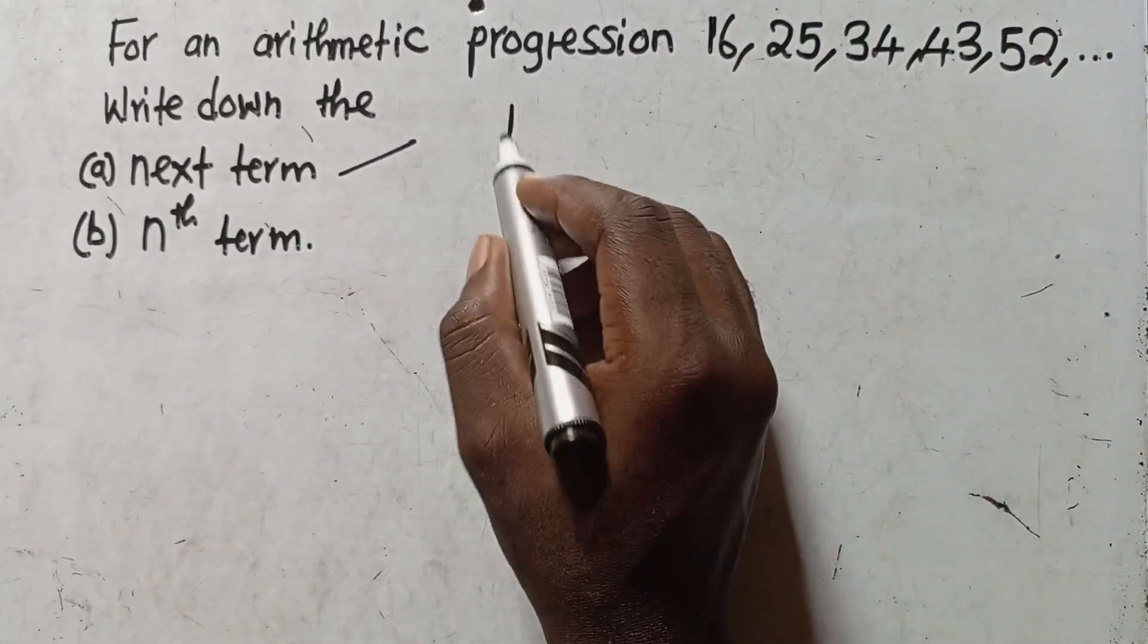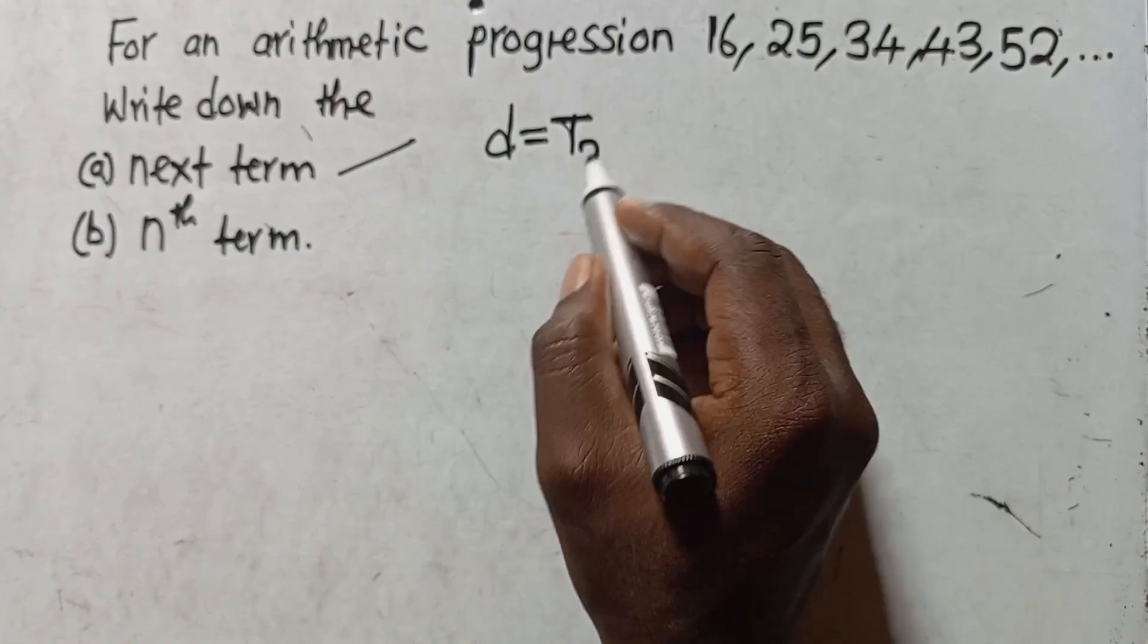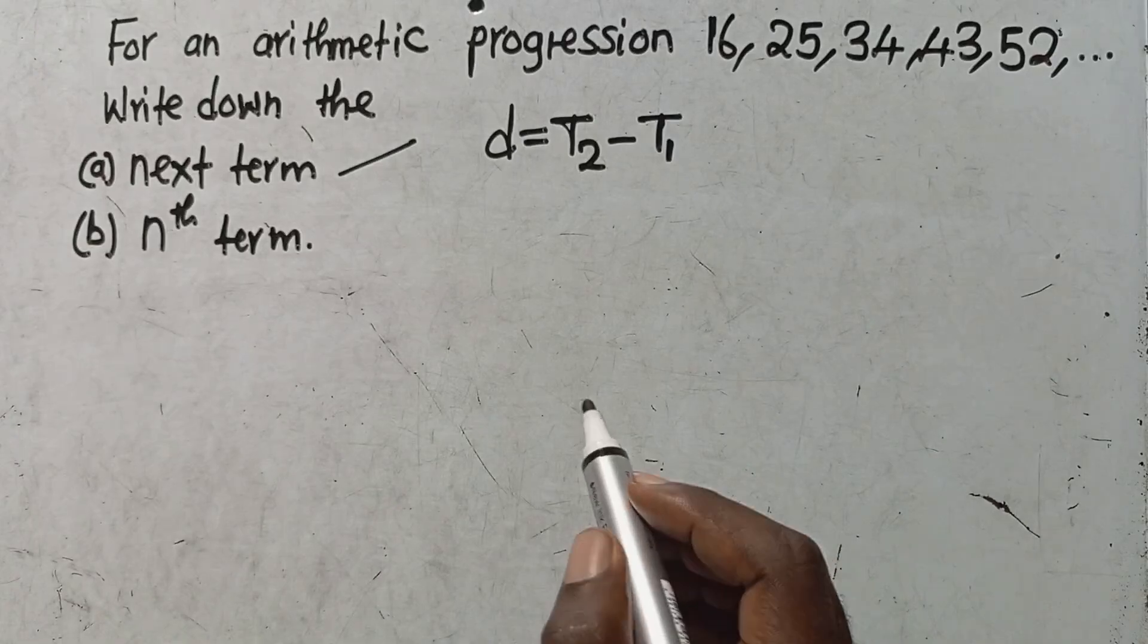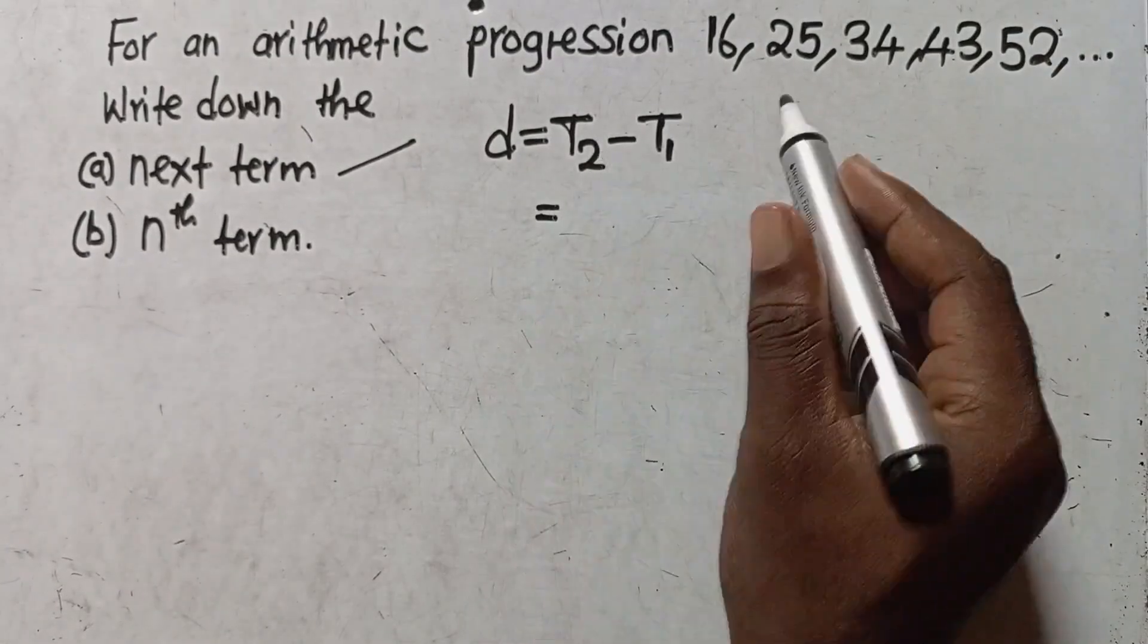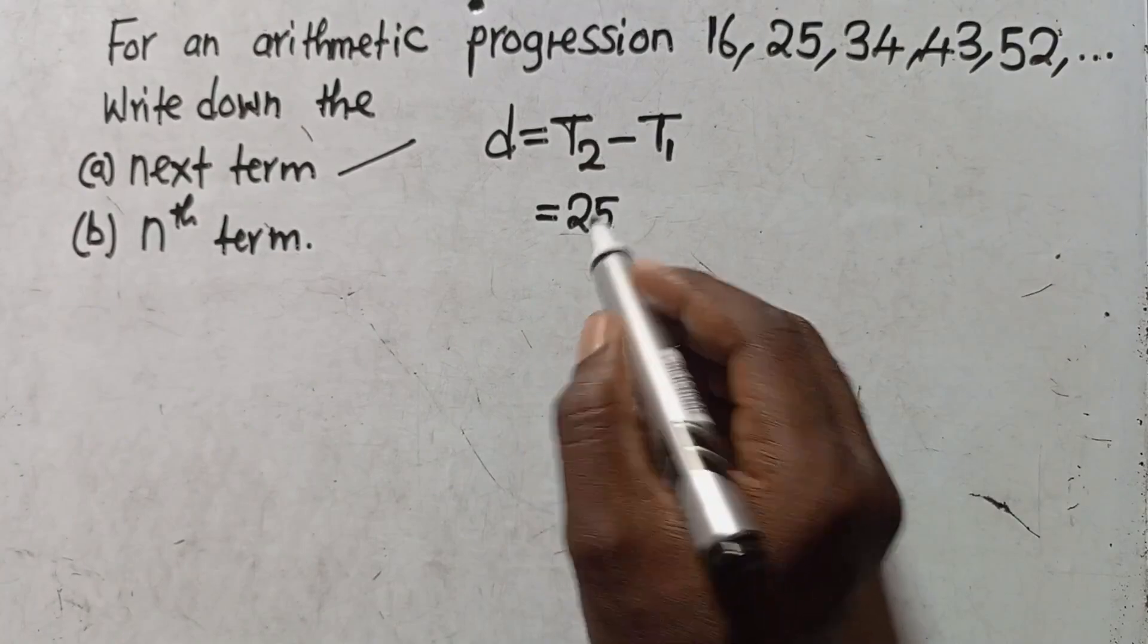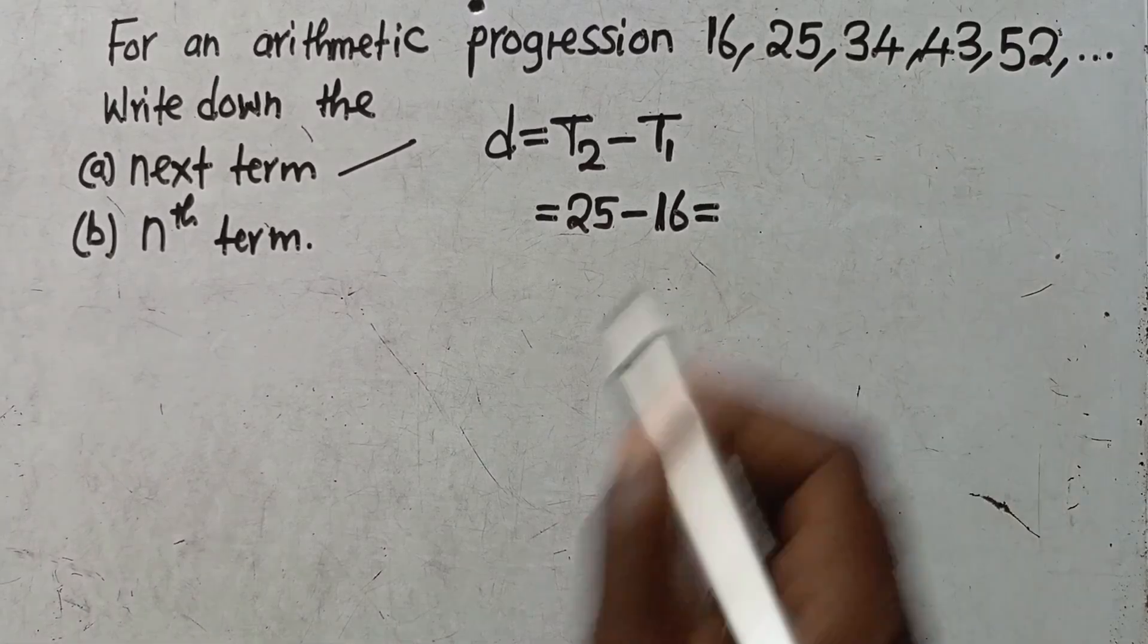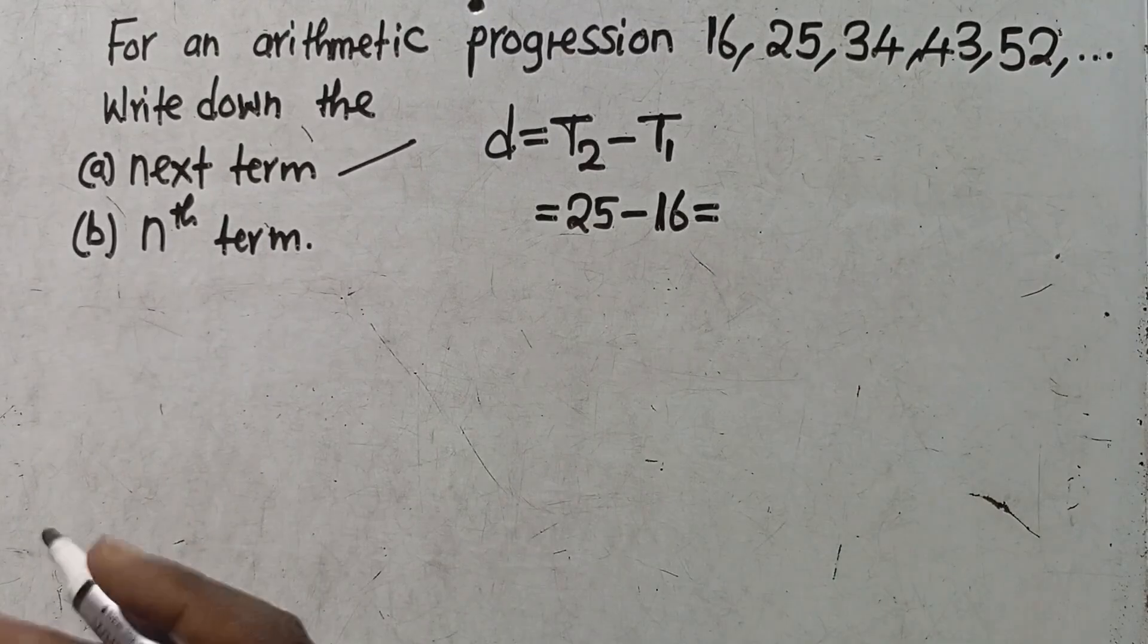The common difference is d. How do you find the common difference? We say second term minus the first term. So in this case, our second term is 25 minus first term, 16. When you do the subtraction, you are going to get 9.